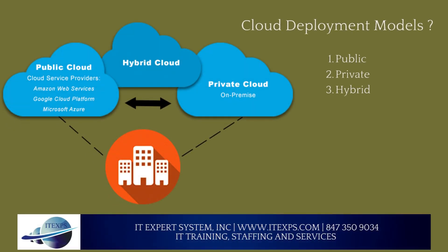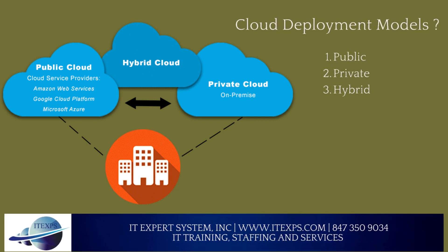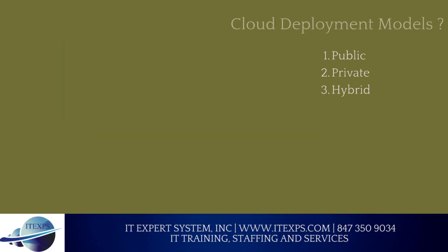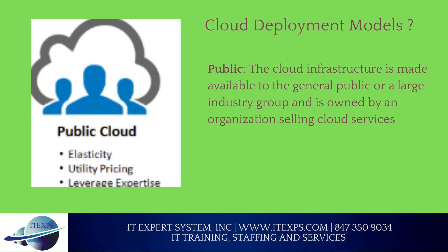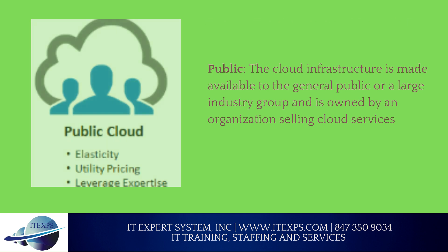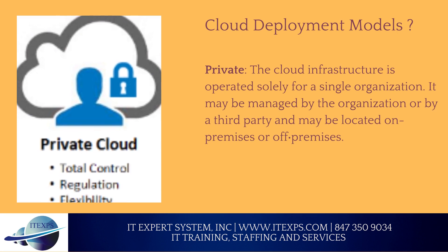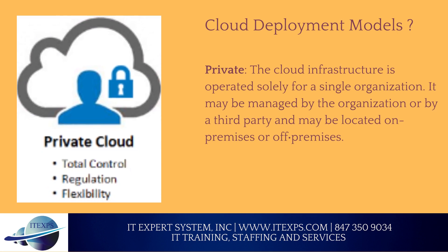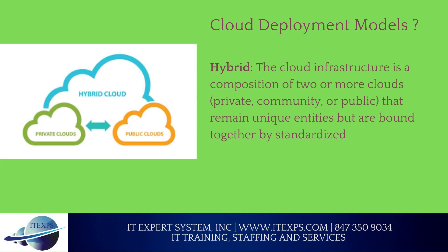Cloud deployment models: Public — the cloud infrastructure is made available to the general public or a large industry group and is owned by an organization selling cloud services. Private — the cloud infrastructure is operated solely for a single organization; it may be managed by the organization or a third party and may be located on-premises or off-premises. Hybrid — the cloud infrastructure is a composition of two or more clouds (private, community, or public) that remain unique entities but are bound together by standardized protocols.